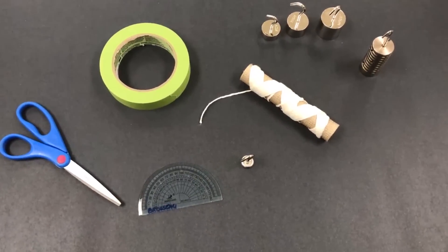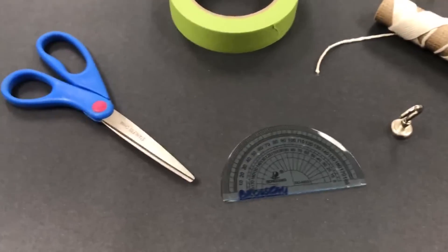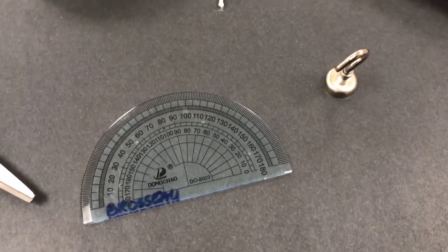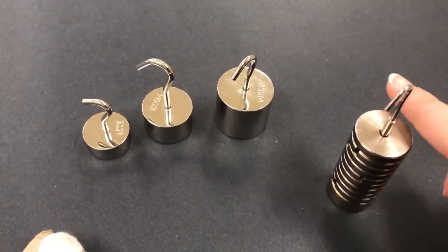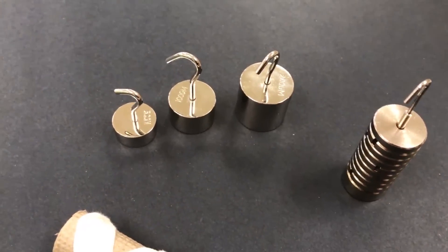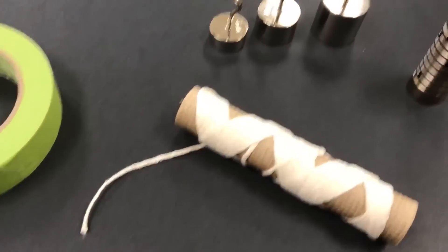The materials for this lab are super easy to acquire. So some string, some scissors, some tape, a protractor, some masses. I really like the slotted mass sets so you can change up the mass easily, but even objects with different masses are fine. About the same size would be nice.